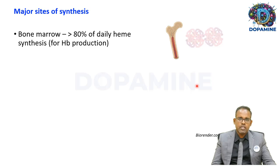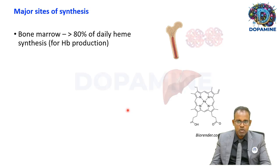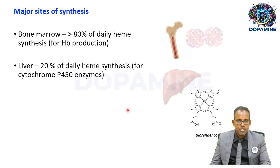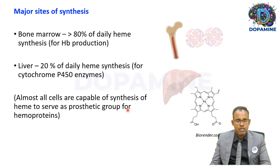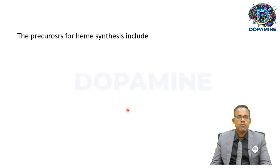Heme synthesis happens predominantly in the bone marrow — greater than 80% of daily heme production occurs there, predominantly for hemoglobin production. About 20% of daily heme synthesis happens in the liver for cytochrome P450 enzymes. Almost all cells are capable of synthesizing heme because almost all cells have hemoproteins which require heme as a prosthetic group.